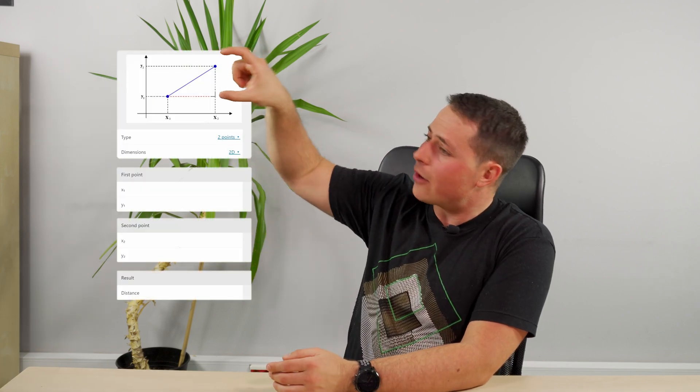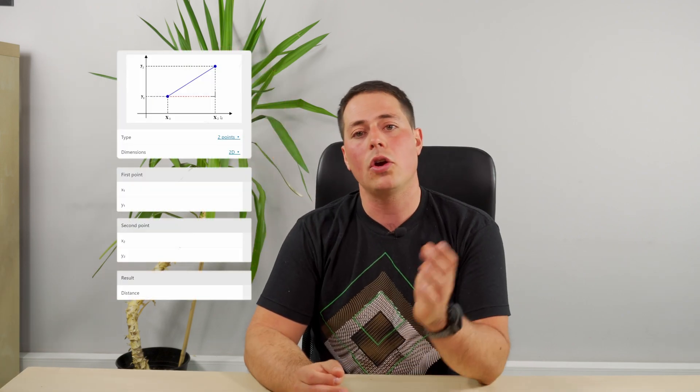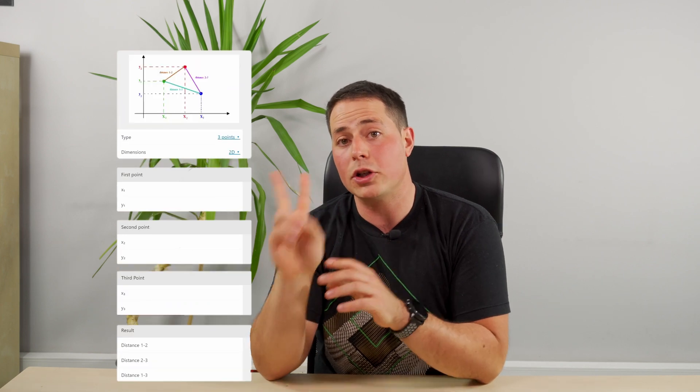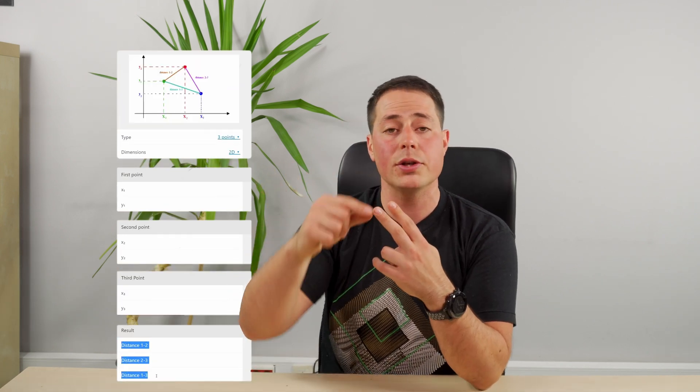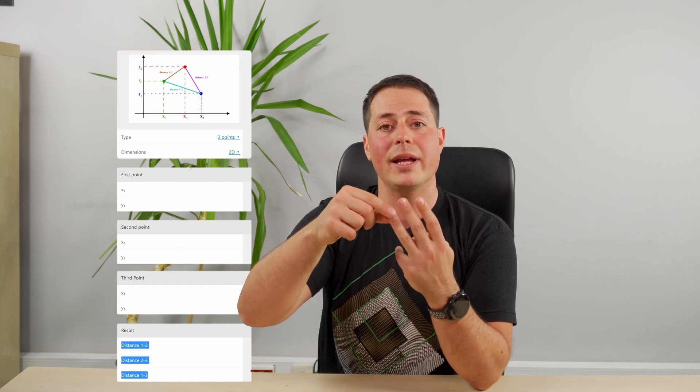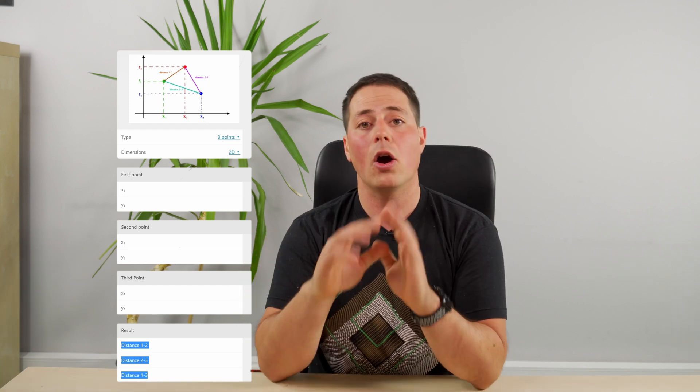For now, we can move on to the extra bit, which is at the very top in this field, where we can select not only two points, but also three points. So we will calculate the distance between points 1 and 2, the distance between 2 and 3, and the distance between 1 and 3, all at the same time.